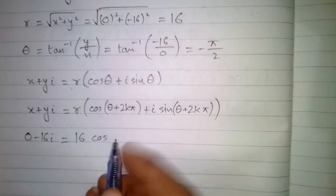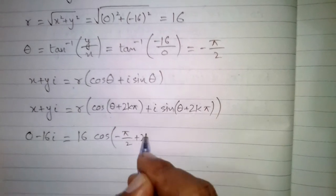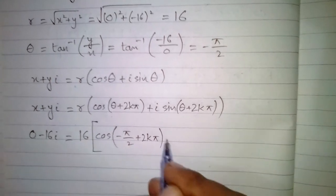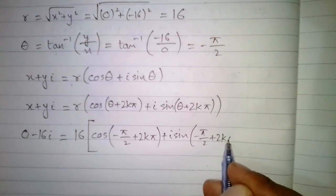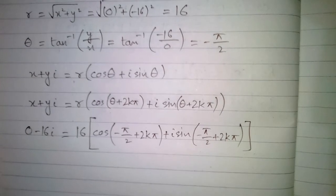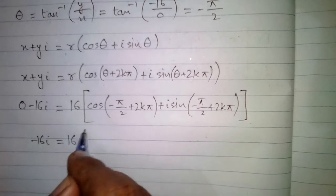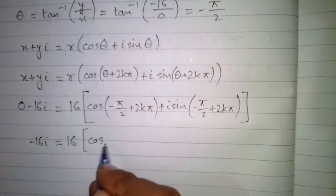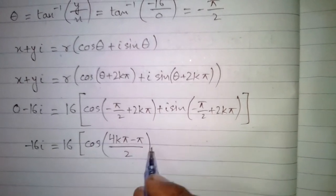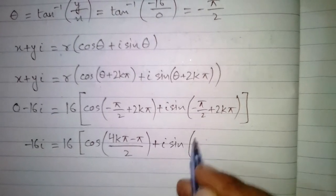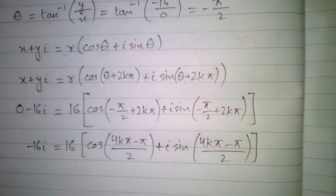Substituting, we have minus 16 iota equal to 16 times (cos(−π/2 + 2kπ) + i·sin(−π/2 + 2kπ)), which can be written as 16 times (cos(4kπ − π/2) + i·sin(4kπ − π/2)).